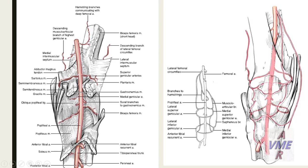In this picture, we have the femoral artery, lateral femoral circumflex, and the branch to hamstring, popliteal artery giving superior medial and inferior medial and genicular branches, and recurrent branch from the anterior tibial artery to form the anastomosis.